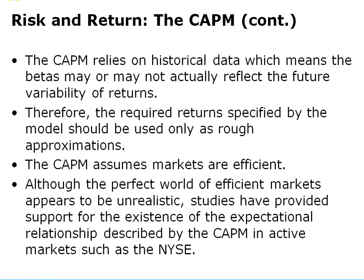The Capital Asset Pricing Model relies on historical data, which means betas may or may not reflect future variables of returns, since past returns are not a 100% guarantee of future returns. Therefore, the required return specified by the model should be used only as a rough approximation. The CAPM also assumes markets are efficient, which appears somewhat unrealistic since markets have bubbles and crashes. Studies have provided support for the model in active markets, but in the real world other factors can reduce its accuracy. However, it remains the most accurate model we have for measuring risk relative to market returns.